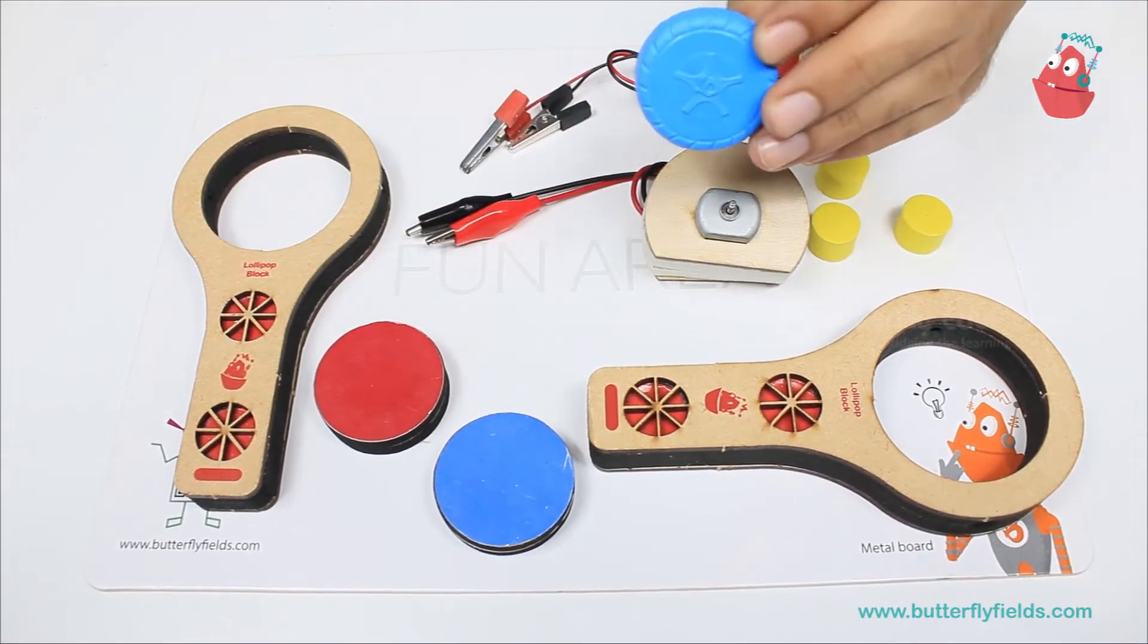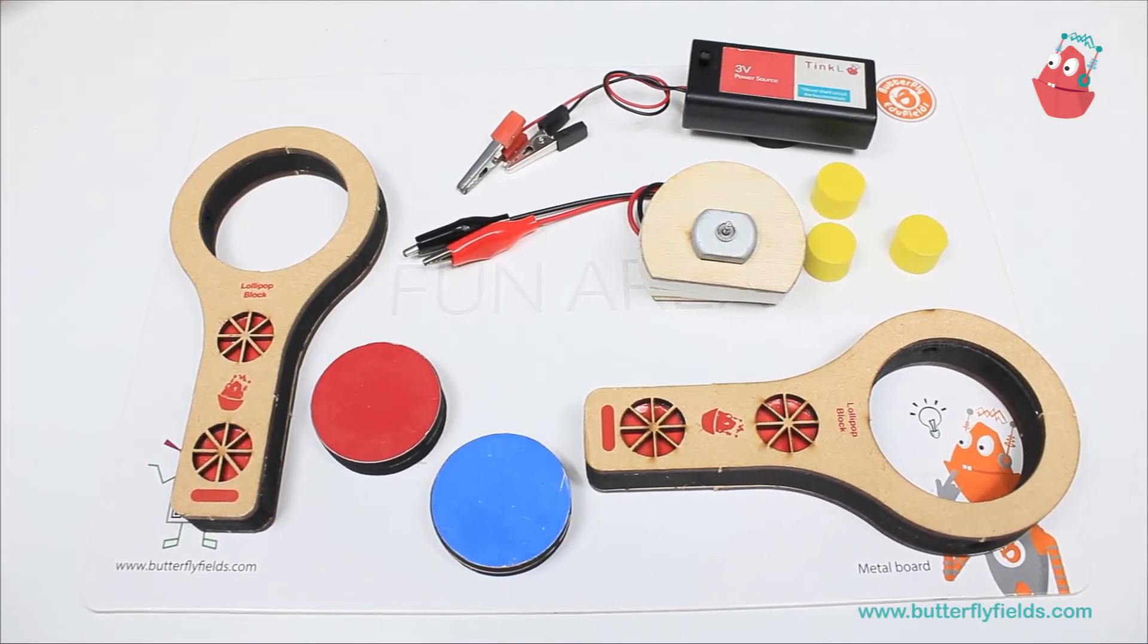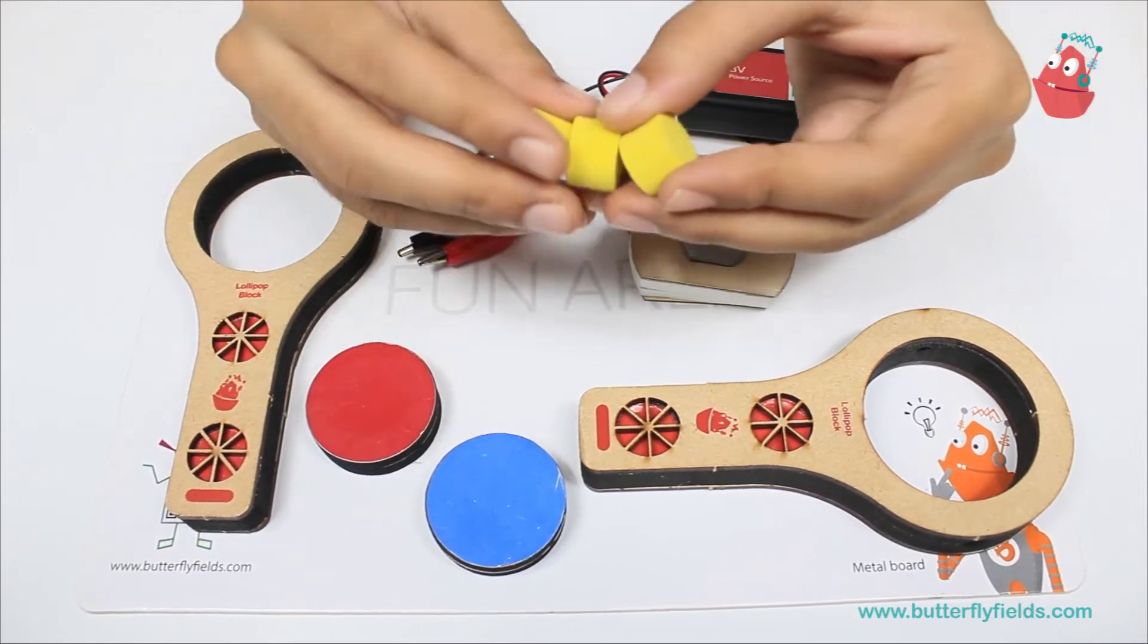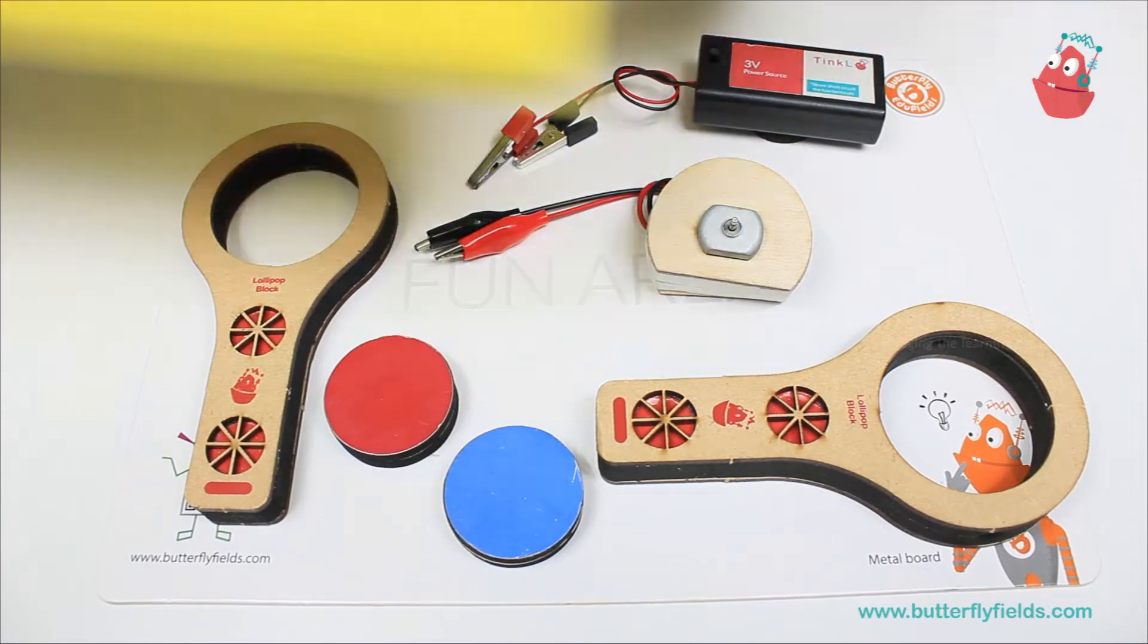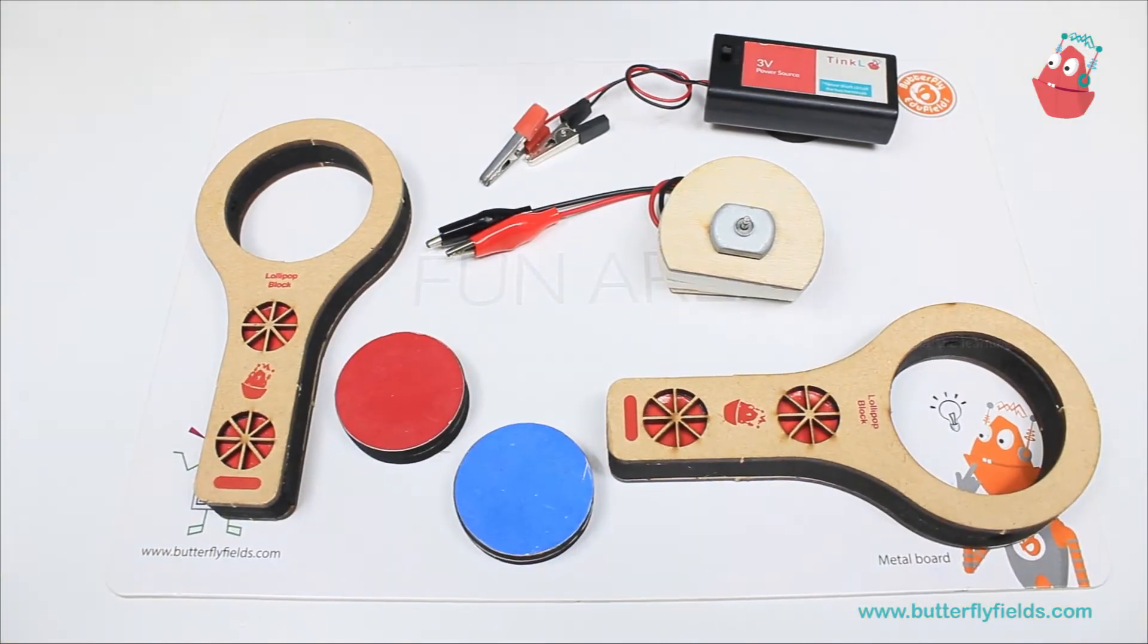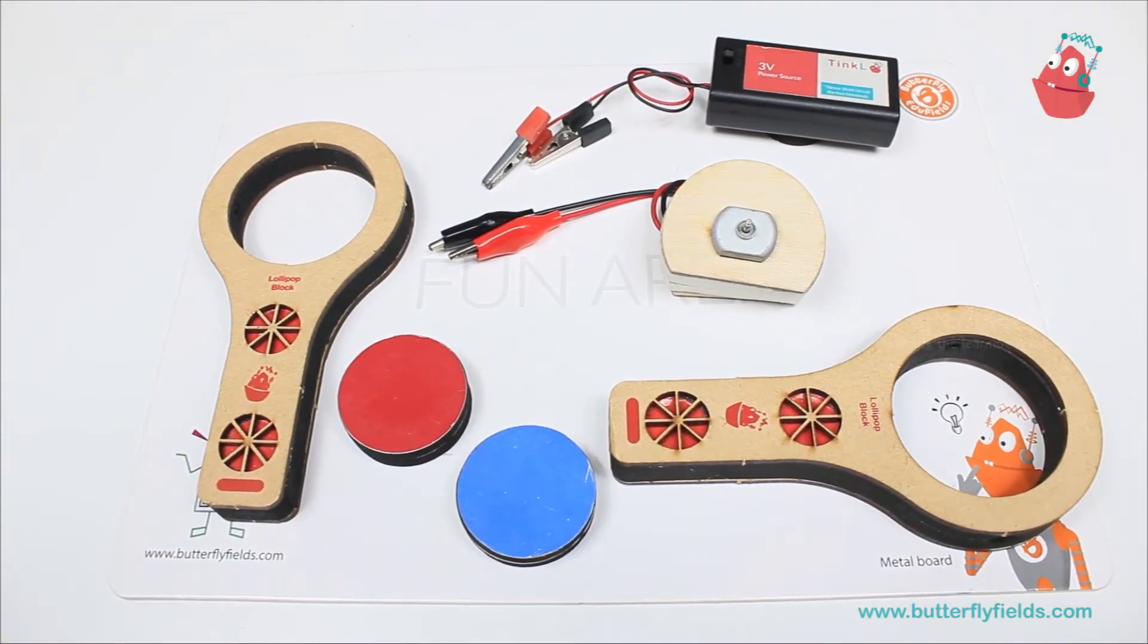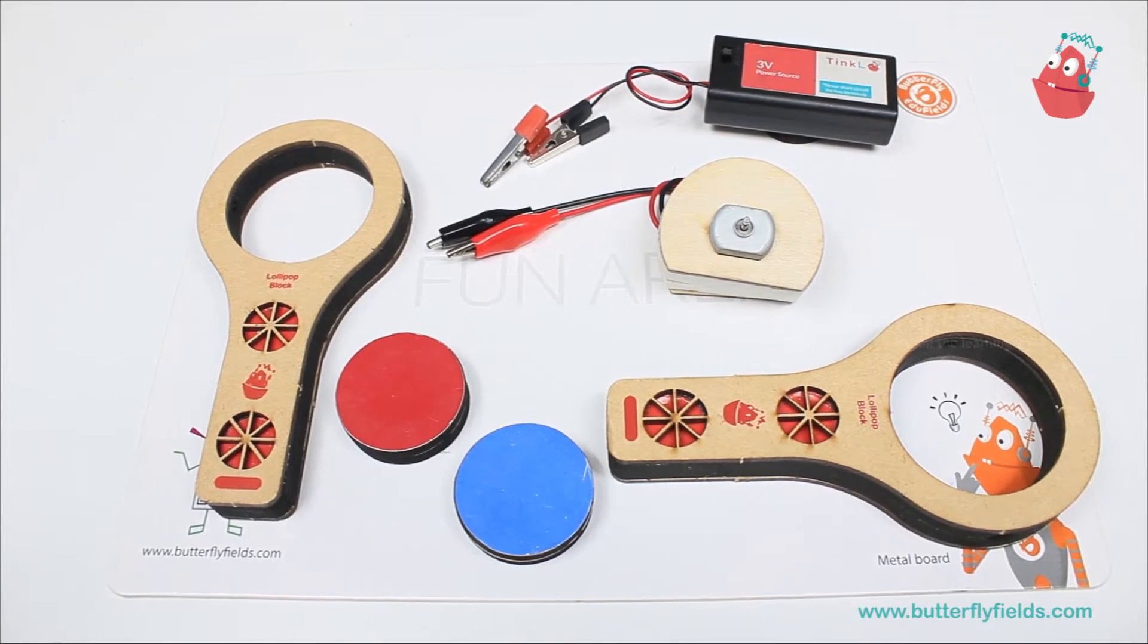This cap you can get from the common box. These foam pieces which I'm going to use as bullets, you can find them in the foam sheet, and the rest of the materials you can get from the base kit. So let's get started.